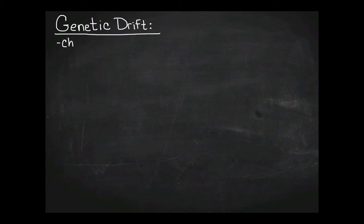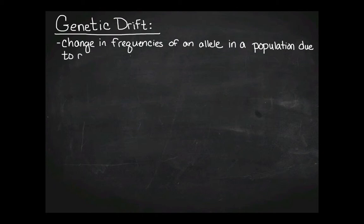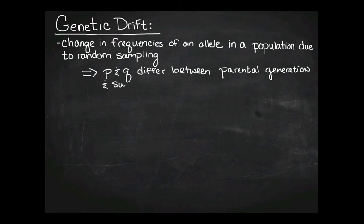So the first thing we need to do is define what genetic drift is. Genetic drift is just a change in the frequencies of an allele in a population that's due to random sampling. We're going to have too small of a sample size, so we're going to randomly not get the appropriate allele frequencies. This is typically P and Q are going to differ between the parental generation and the subsequent generations, and that's going to be due normally to a small population size or a small number of offspring.